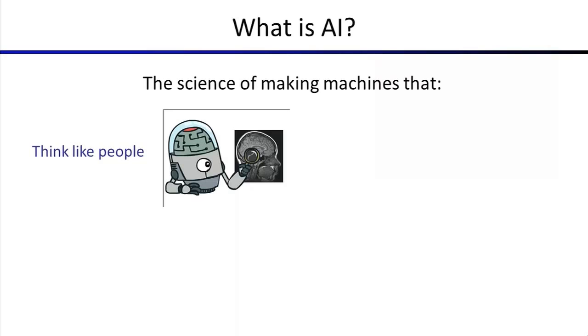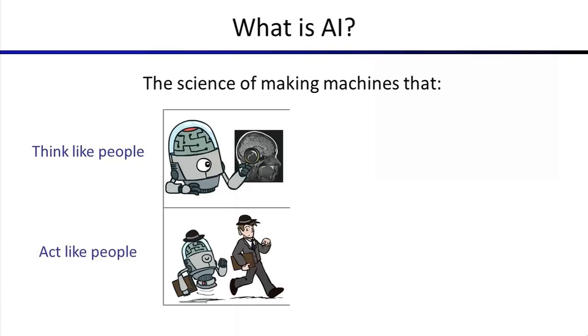So another thing that people at times have thought AI should be is we should be building machines that act like people. So we should say, who cares about how they think? They can think in some strange, alien, silicon way, but the action, the behavior has to be like what we know from people. This was actually a very early definition. This is straight from Alan Turing, the definition that really all you can do is check behavior. Is the behavior like an intelligent human?